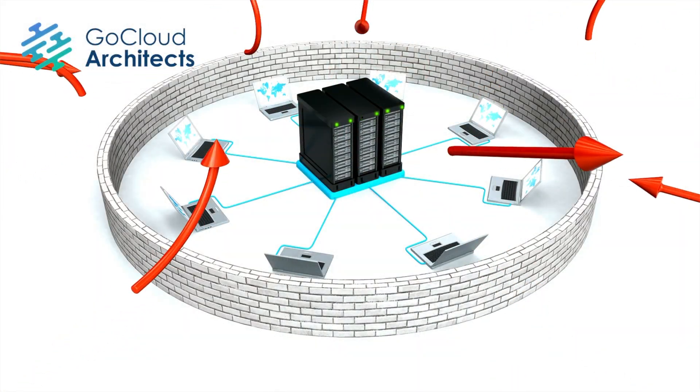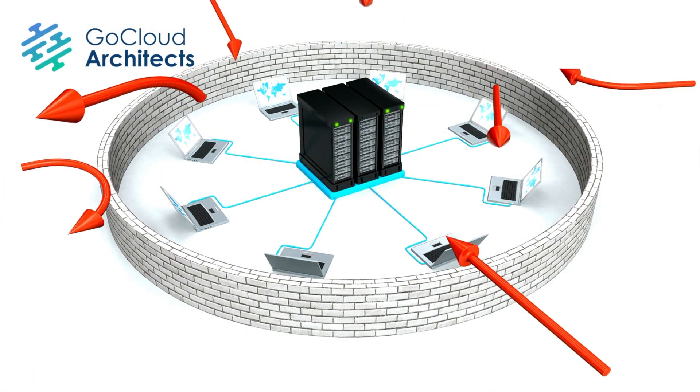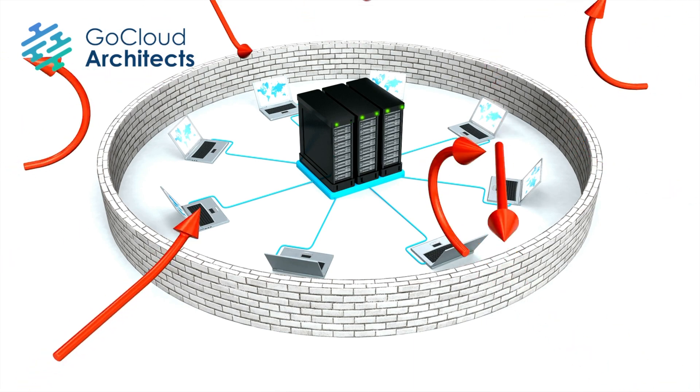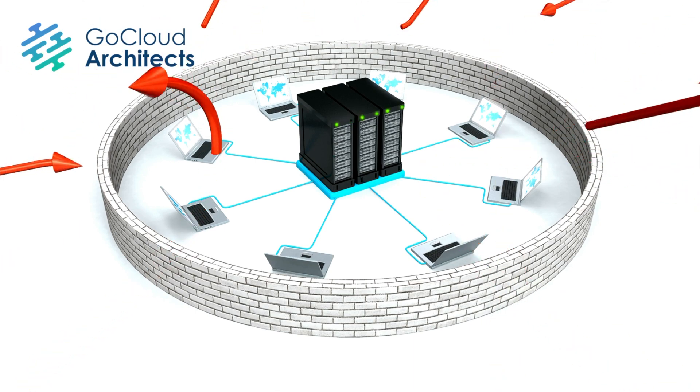Firewalls by default will block all external traffic from coming in — everything is blocked unless you explicitly allow it through policy. By comparison, a firewall will allow all your internal network traffic out to the internet, and it will allow all your return traffic back through the firewall.